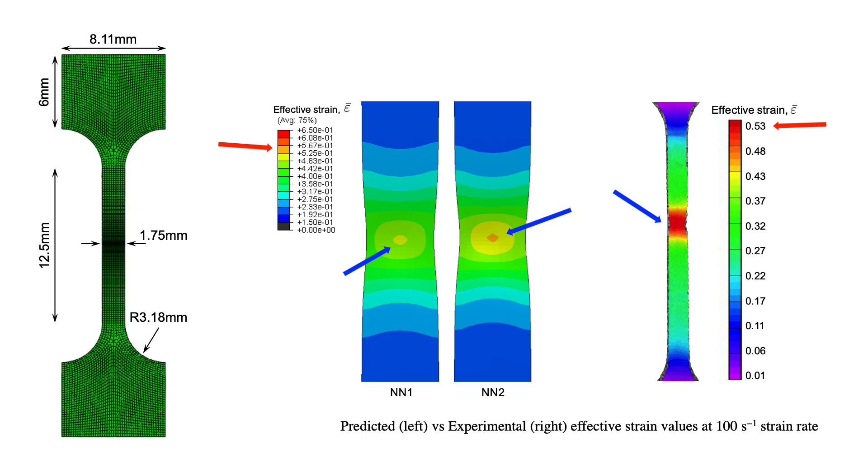So NN2 was able to predict the onset of, for example, necking in my tensile specimen more accurately. It was giving me the effective strain values more closely to what the experimental was showing me.